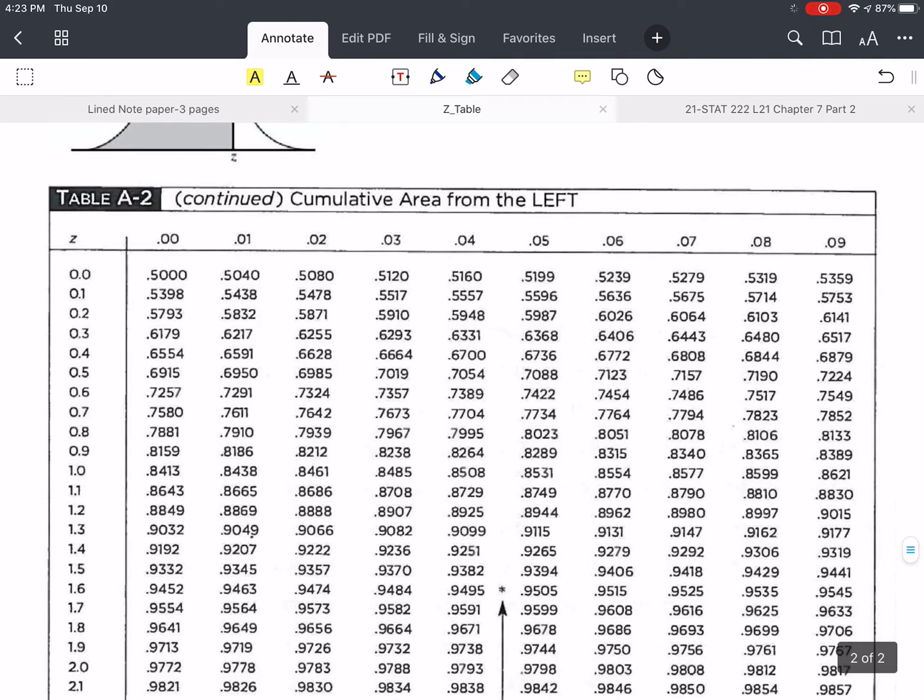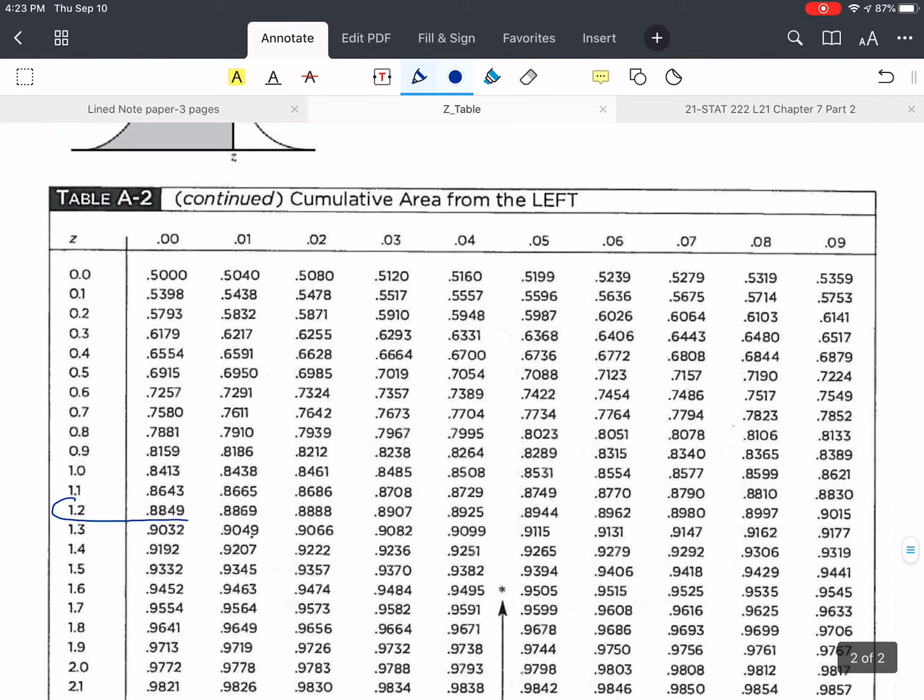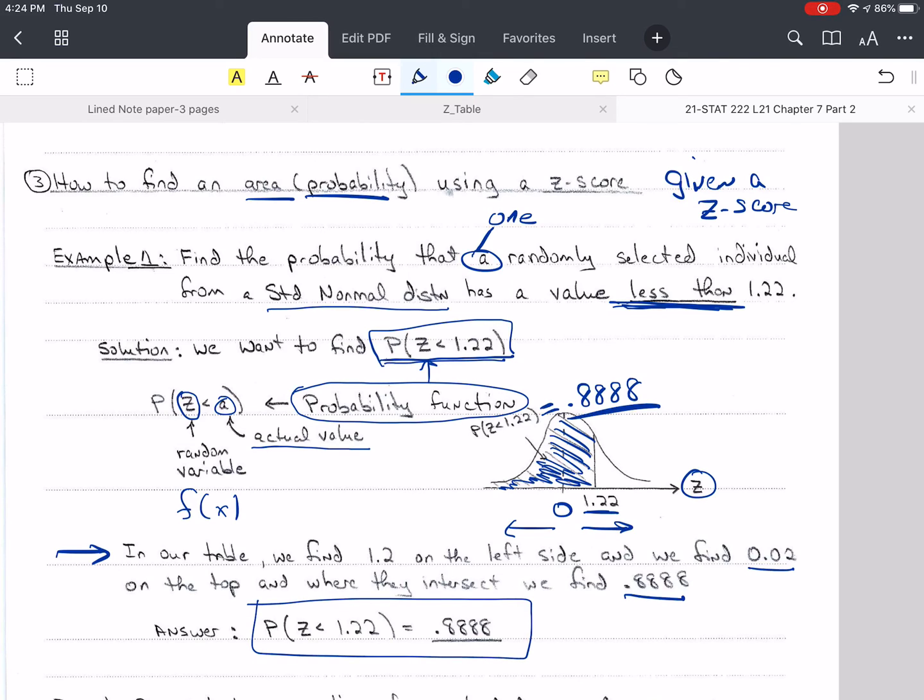and I want positive 1.22. And so I find 1.2 over here, and I need a 2 up above. So here's a 2, and so 0.8888 is the answer. So this value up here is equal to 0.8888. And so I've written down what we do. We find 1.2 on the left side, and we find 0.02 on the top, and where they intersect, we find this value. So the answer is this. Probability Z is less than 1.22 is 0.8888.